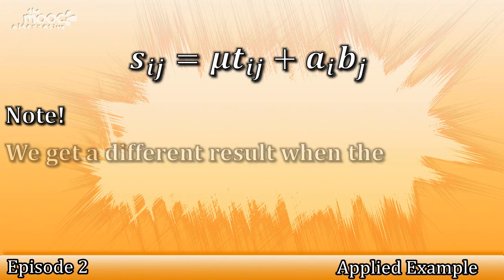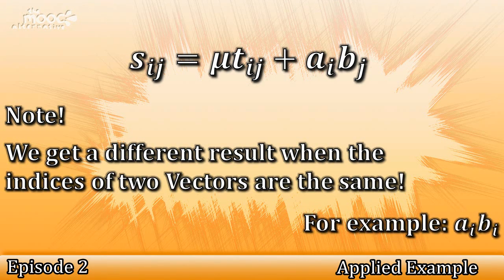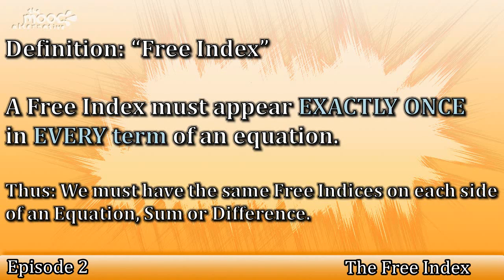Just to note, we get a completely different result when the indices of two vectors are the same, such as a_i * b_i. We will consider this case later on in the course. Let's have another look at this equation: S_ij = mu * t_ij + a_i * b_j. You can see that each index appears exactly once in each term. We define an index that appears exactly once in every term as a free index. We must have the same free indices on each side of an equation, sum or difference.